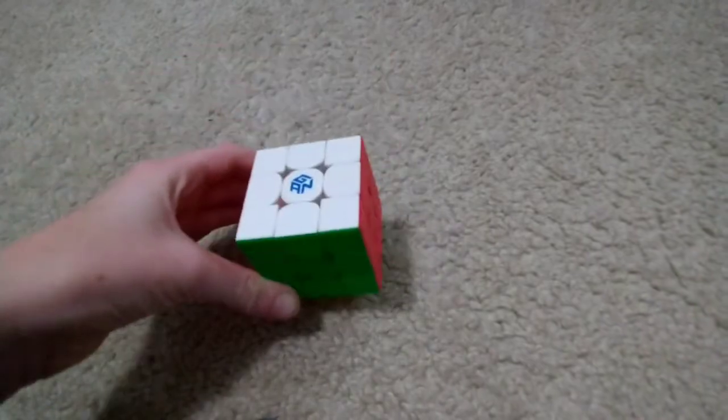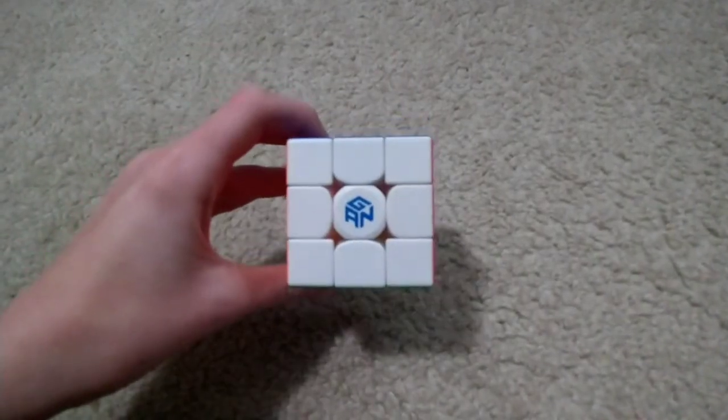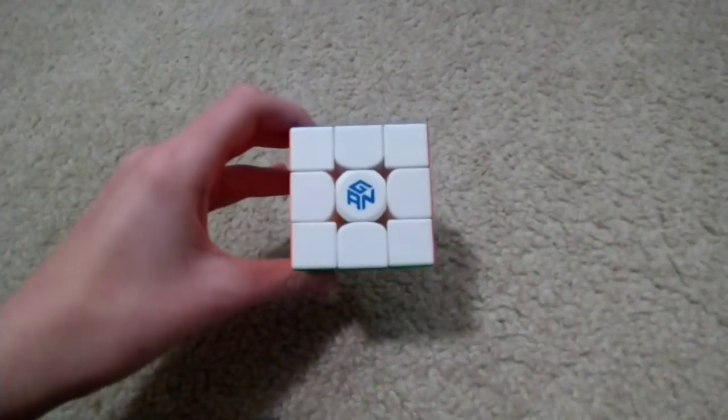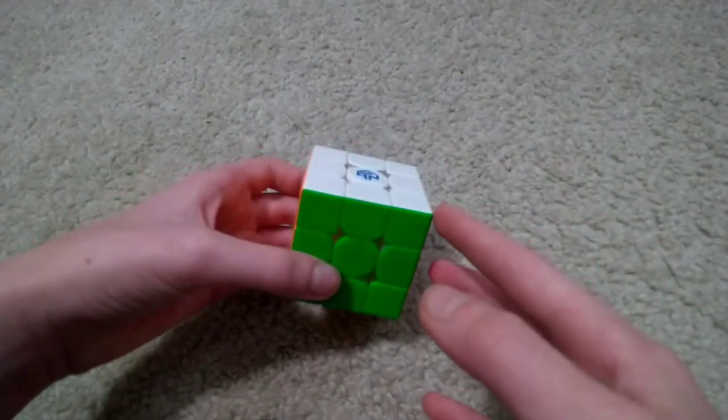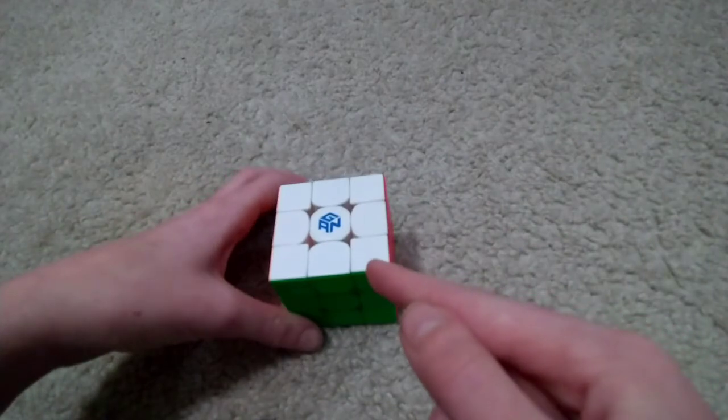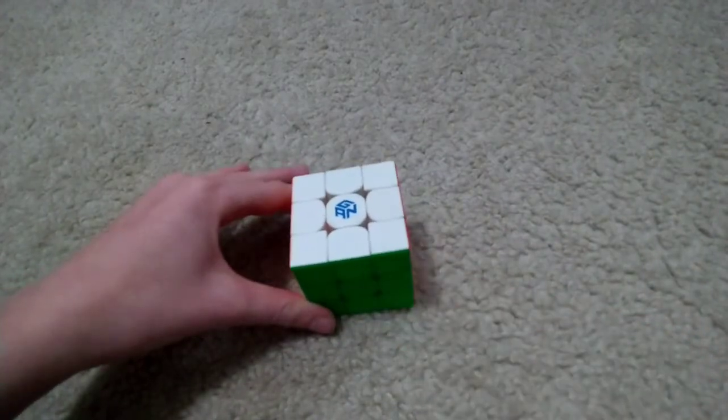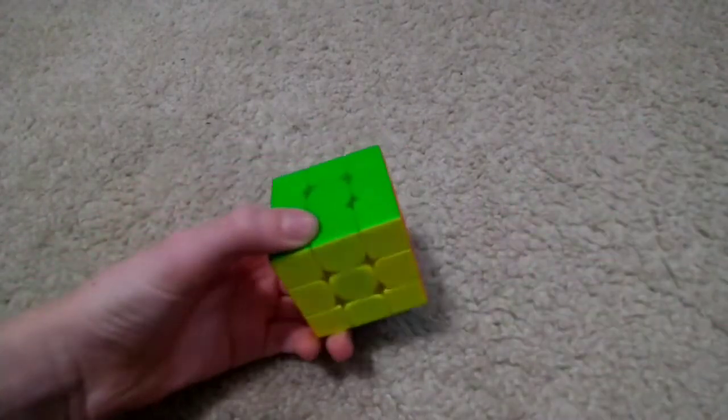Speaking of core magnets, there are core magnets inside of this cube. If you didn't know what core magnets are, there are magnets that go from the inside of the core to the corner stock, which makes for excellent stability.